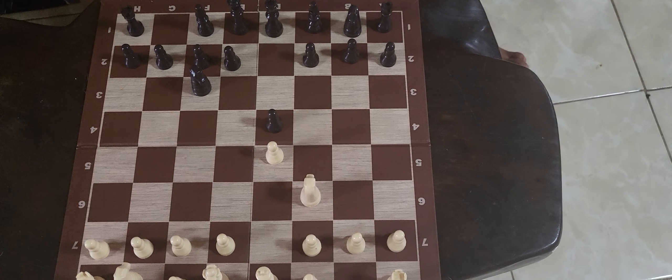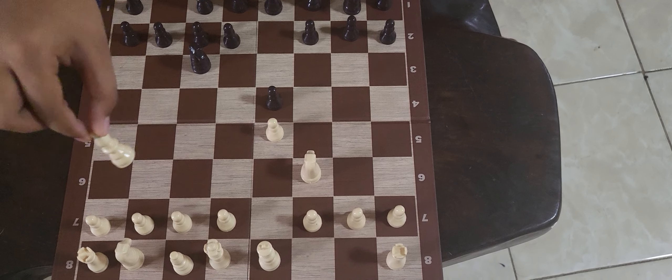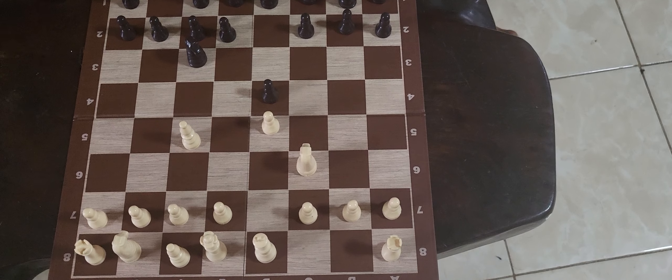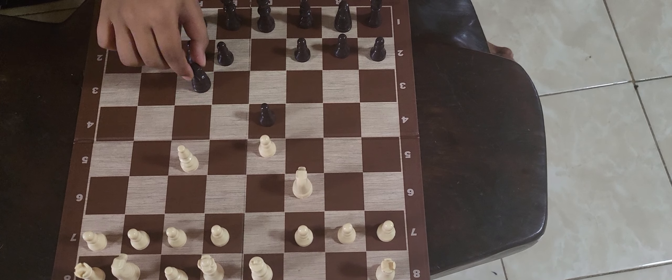Then they will move their bishop to f5. Then you move your horse to e5.